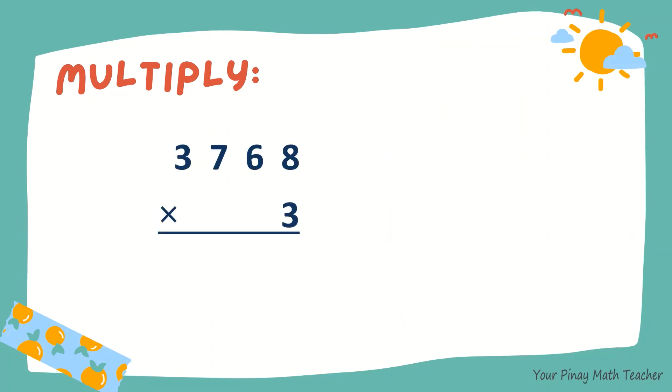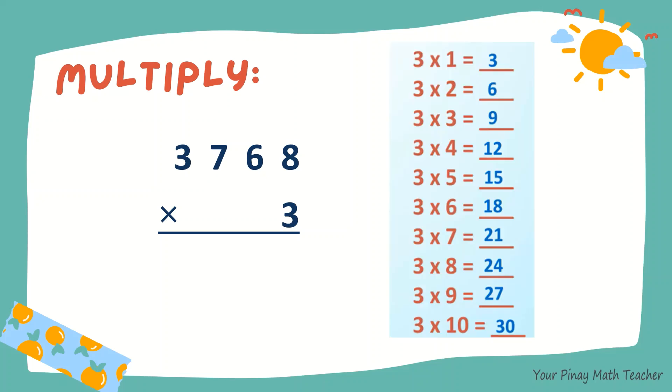Next, 3768 times 3. 3 times 8 is 24. So 4, carry 2. 3 times 6, 18. Plus 2, 20.